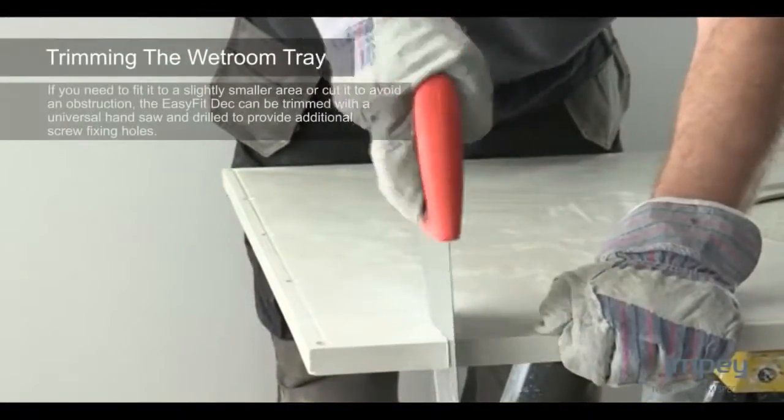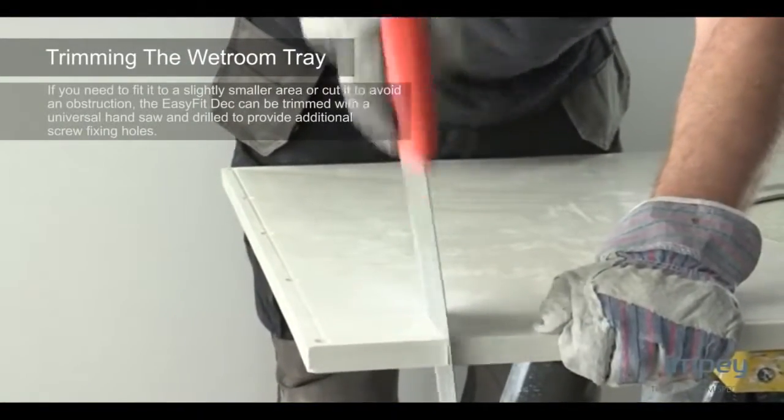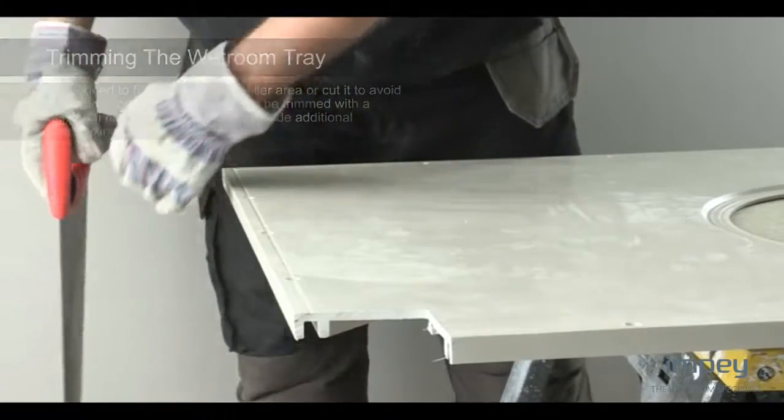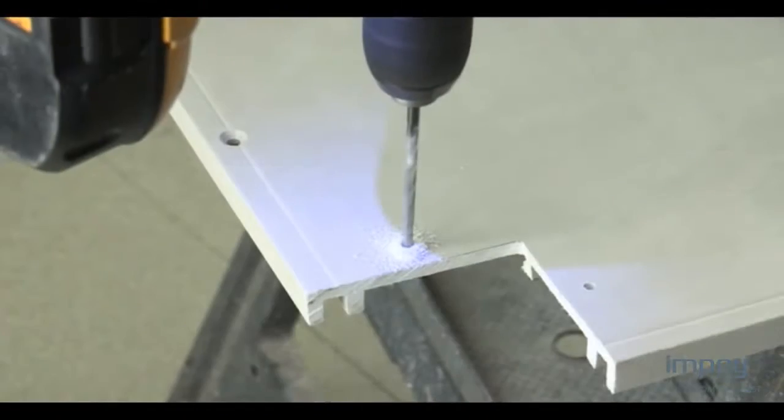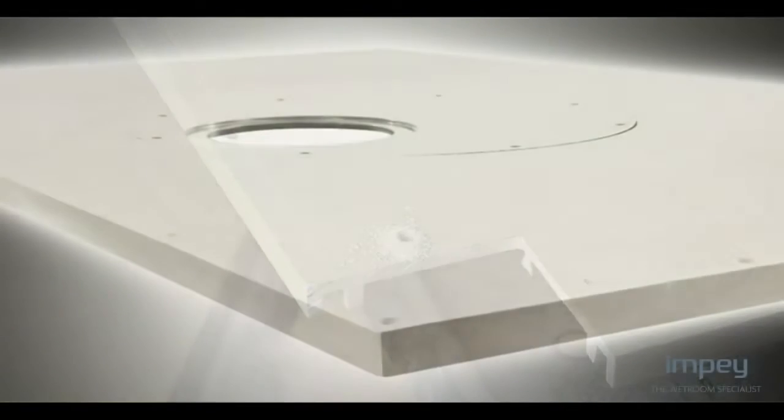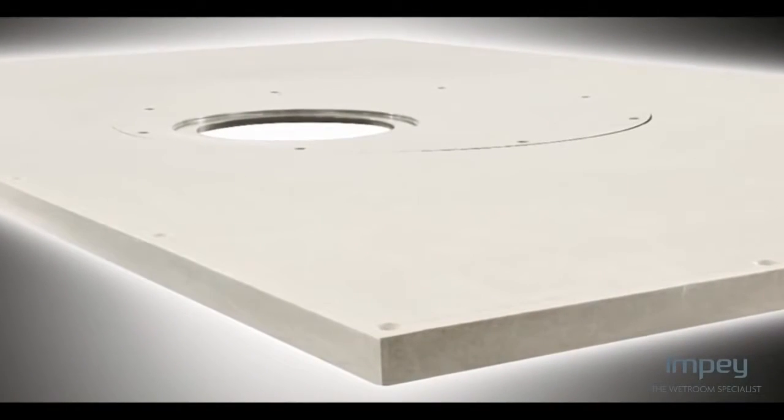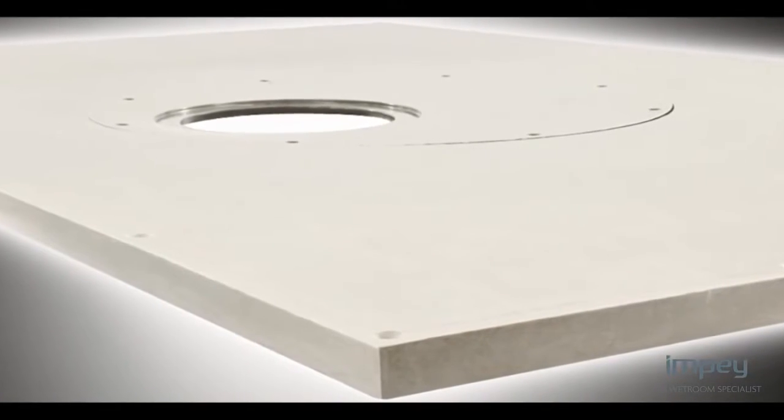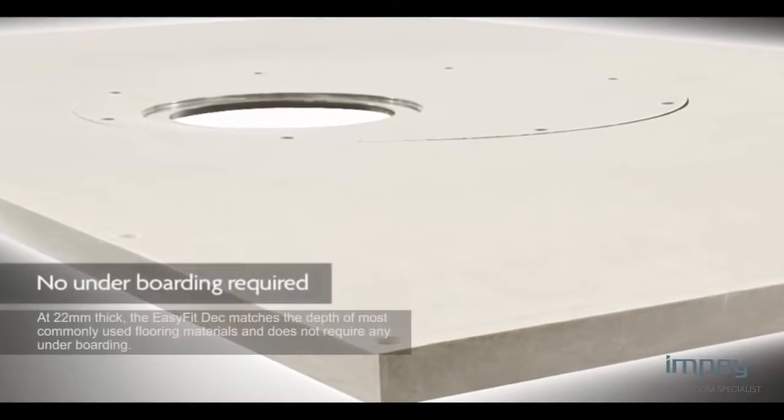If you need to fit it to a slightly smaller area or cut it to avoid an obstruction, the EasyFit deck can be trimmed with a universal handsaw and drilled to provide additional screw fixing holes. At 22mm thick, the EasyFit deck matches the depth of most commonly used flooring materials and does not require any underboarding.